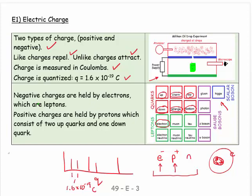I'd like you to go beyond the electron, proton, and neutron. I'd like you to be comfortable with this model—to go to that next level and say there are things called quarks, leptons, and bosons (scalar or gauge bosons). For instance, negative charges are held by electrons which are leptons, and positive charges are held by protons which consist of two up quarks and one down quark.